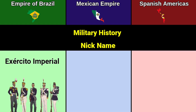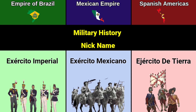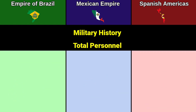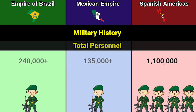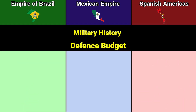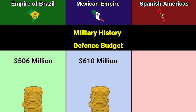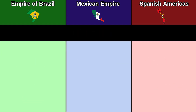Nickname: Exercito Imperial, Exercito Mexicano, Exercito de Tierra. Total personnel: more than 240,000, more than 135,000, 1.1 million. Defense budget: 506 million dollars, 610 million dollars, 1.6 billion dollars.